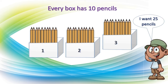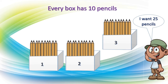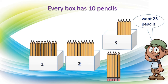So: 2 boxes that is 20 pencils, plus 5 pencils from the third box. We untied the third box and taken out 5 pencils from it. This boy got 25 pencils. This is nothing but untying and doing the subtraction.